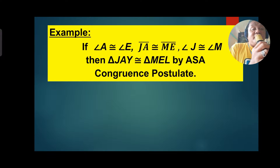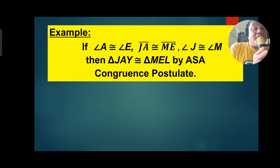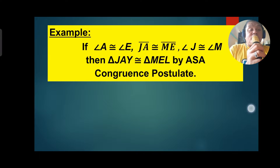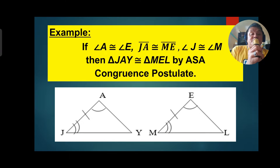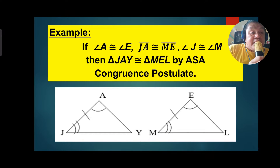If Angle A is congruent to Angle E, Side GA is congruent to Side ME, and Angle J is congruent to Angle M, then Triangle JAY is congruent to Triangle MEL by the ASA Congruence Postulate. I will give you these figures — we have two triangles: Triangle JAY and Triangle MEL.